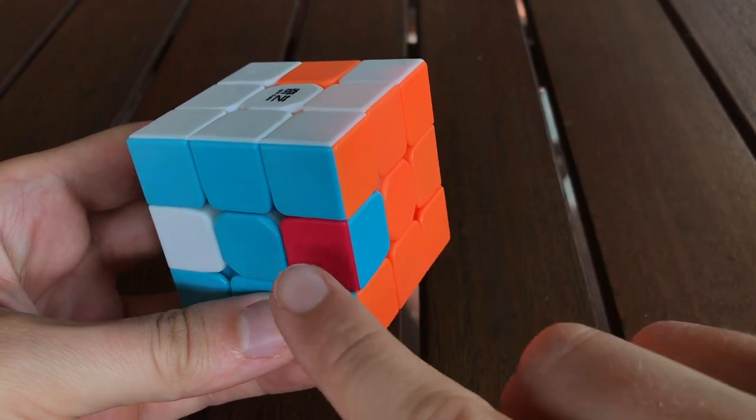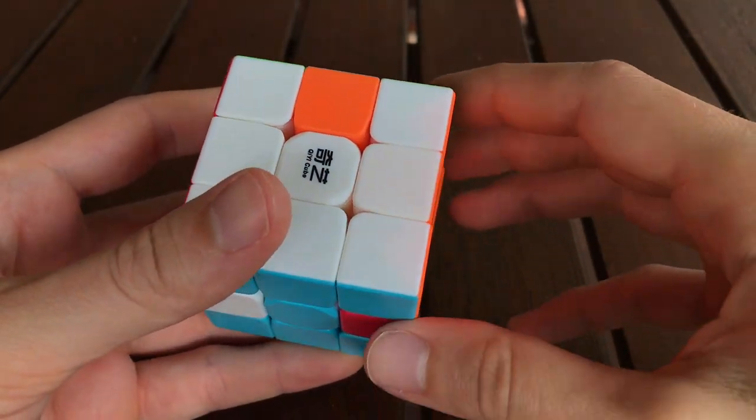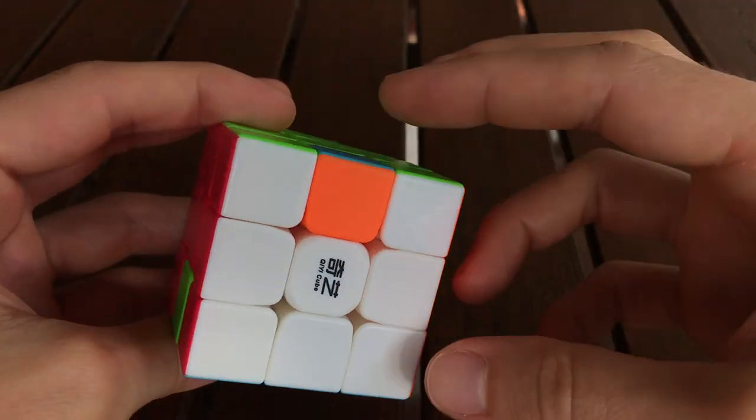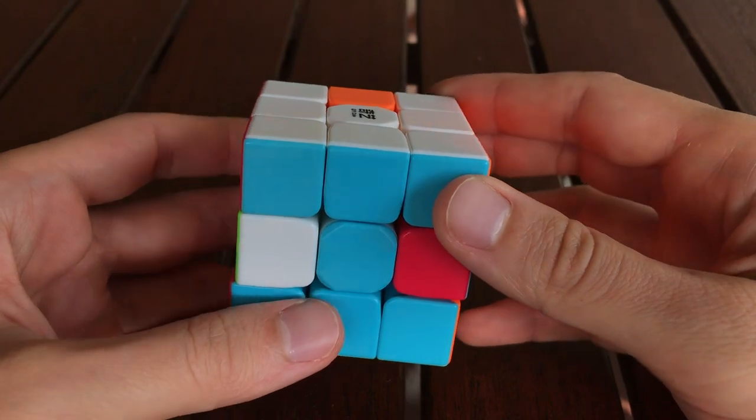So notice that the blue and orange edge piece has moved to the upper back position, and the blue is on the back, and orange is on top. Similarly, the green and white piece is moved to where green is on the left and white is on the front.